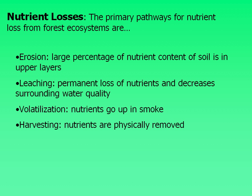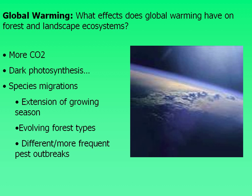Global warming is another popular topic when discussing human impacts on the environment, and there is a discussion board assignment on it. For the most part, global warming has to do with more CO2 being released into the environment, which also has an effect on photosynthesis. Dark photosynthesis — what happens at night when plants process carbohydrates and starches made during the light phase — is affected as well. There is actually a study showing that poison ivy is getting bigger and more toxic due to the higher levels of CO2 in the atmosphere.